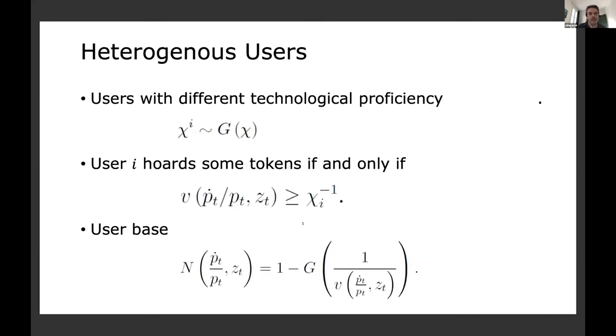Now, we will have also heterogeneous users. So they have different technological proficiencies. So some users are very good with computers, maybe some of them at the conference, the computer scientists. So they have adopted blockchain a long time ago. And then the economists are very bad. So they have a low gamma. And so this is a fixed cost. And you adopt the service only when your flow utility V is superior to the fixed cost. And so you can show that the user base, there's 1-G times 1/V. So that's the number of users at each point in time that uses the service. It depends on the level of technology Z and on the evolution of price. So if the price grows faster, you have more users because they see it as a financial instrument.